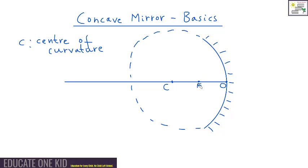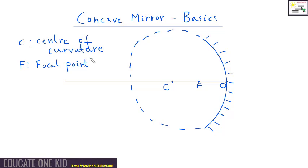Notice these two other points here, F and O. We'll talk more about F as we go along in this video. F is known as the focal point, and O is just the center of the mirror.